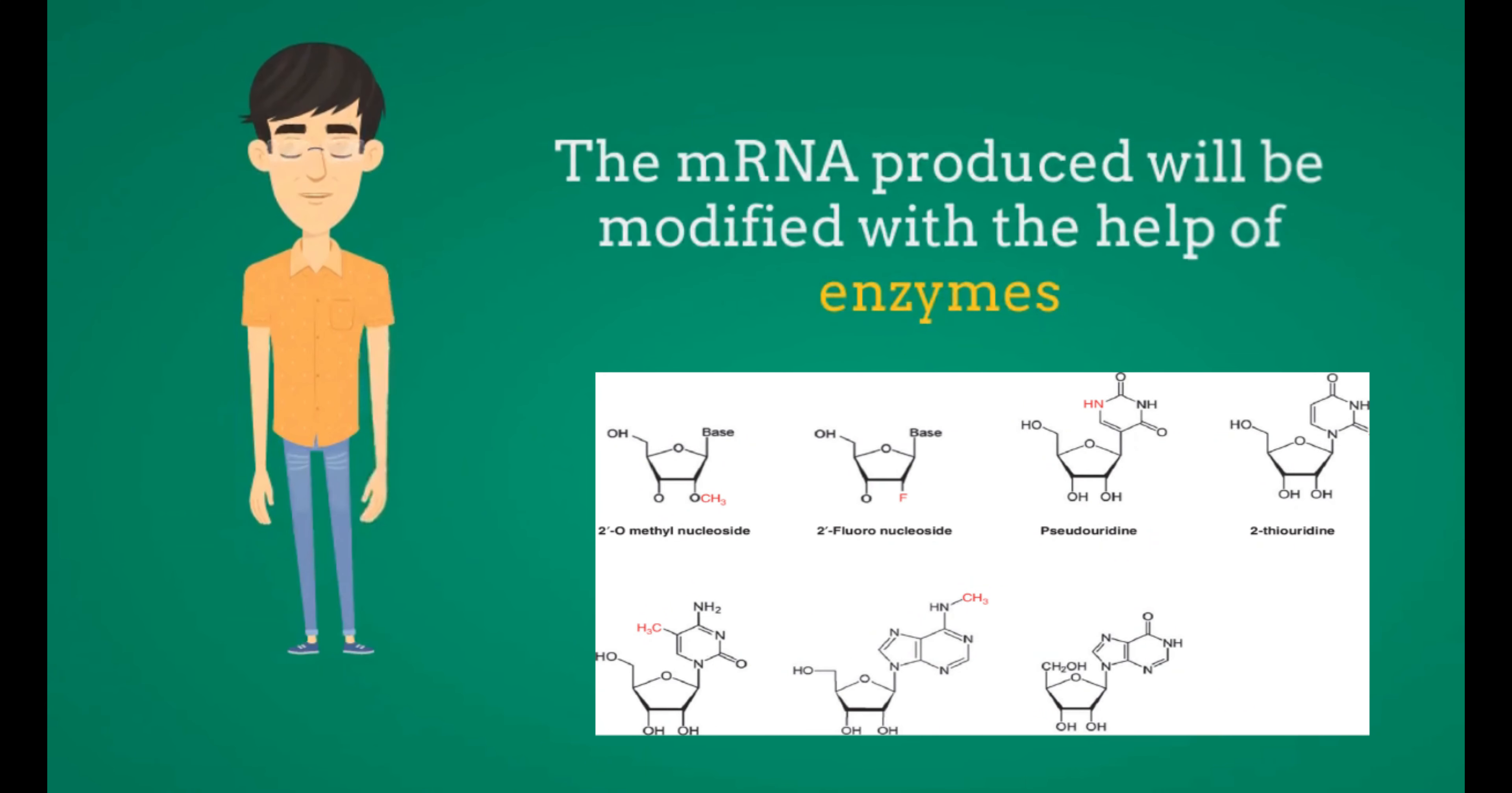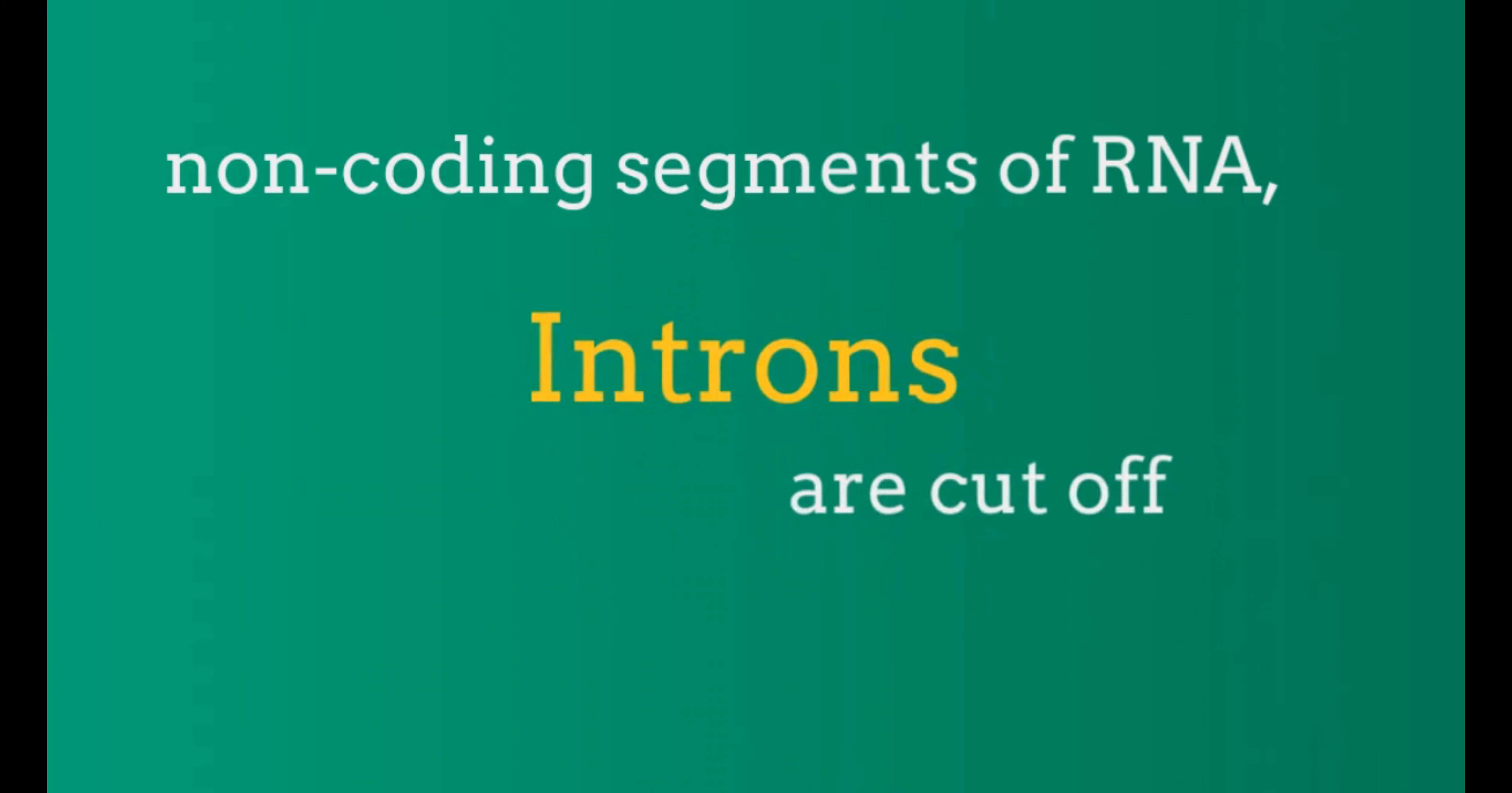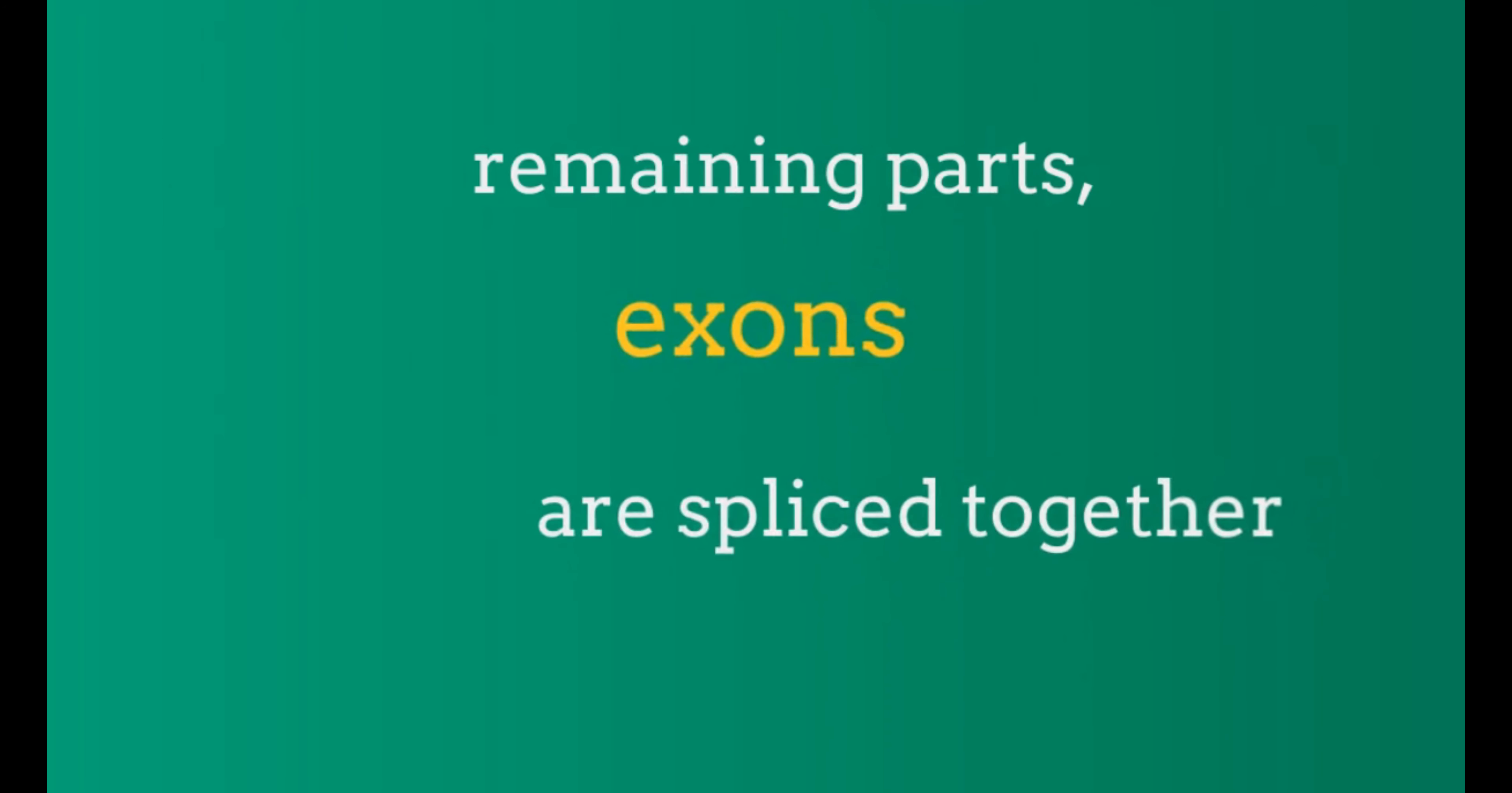Before entering the second major step, the mRNA produced will be modified with the help of enzymes. The primary transcript will be altered, with non-coding segments of RNA called introns cut off, and the remaining parts, exons, spliced together.